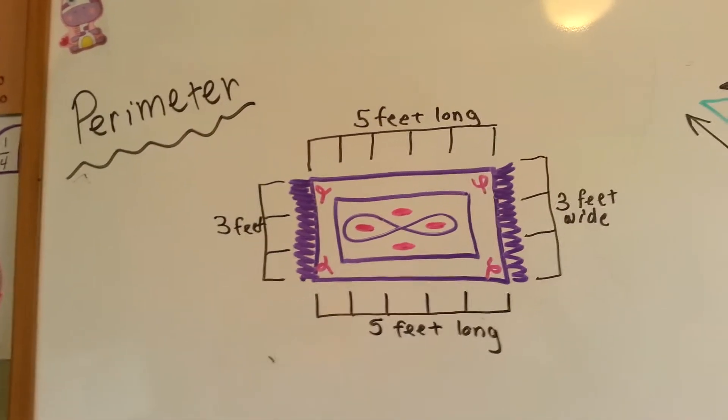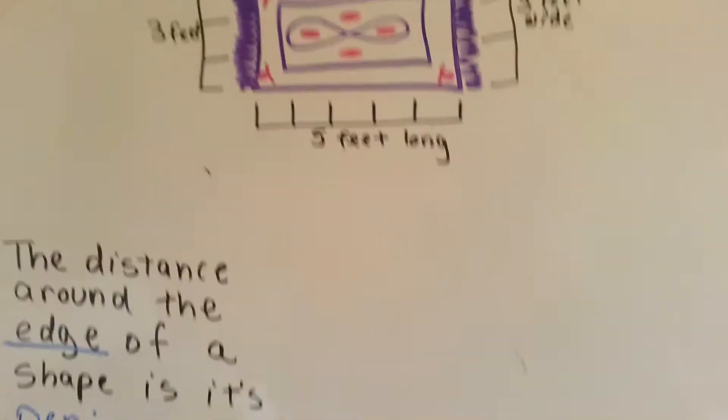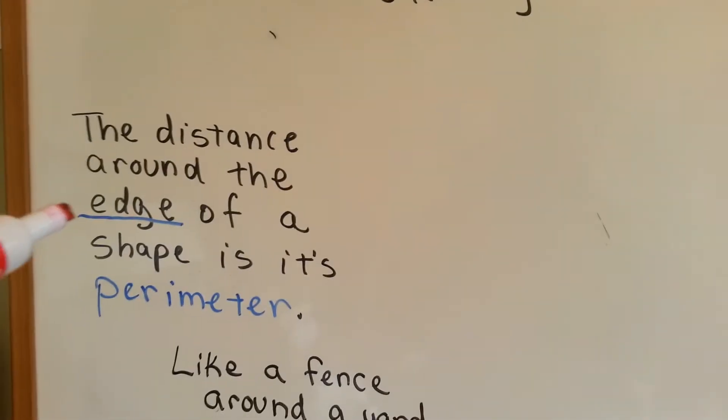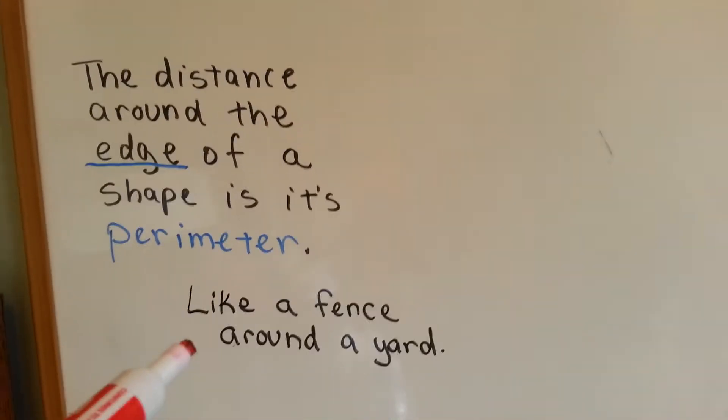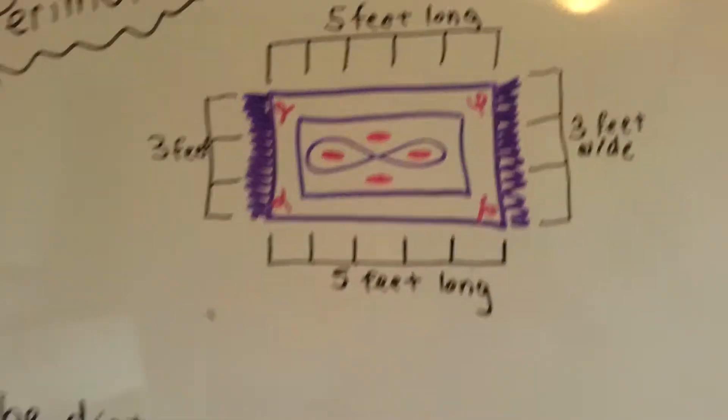I used this rug, but now we're going to use it in a different way. The distance around the edge of a shape is its perimeter, like a fence around a yard. Think of only the edge, not the inside.